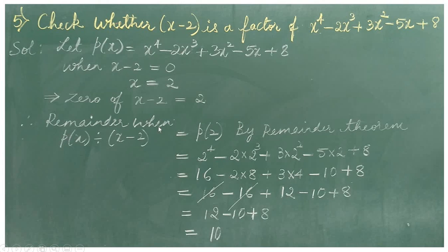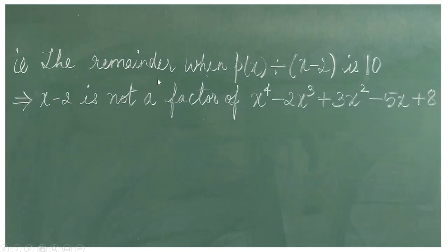That is, the remainder when p of x is divided by x minus 2 is equal to 10. This implies x minus 2 is not a factor of p of x, since the remainder is not equal to 0. That is, x minus 2 is not a factor of x raise to 4 minus 2x cube plus 3x square minus 5x plus 8.